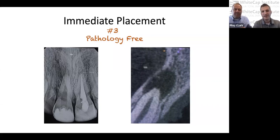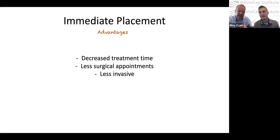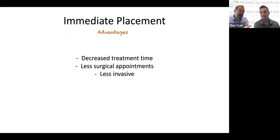Those are the big three for immediate placement. The advantages: decreased treatment time — getting the bone graft and implant to heal simultaneously is a huge plus for efficiency and less surgical appointments for the patient. In the aesthetic zone especially, the big advantage is maintaining the periodontal scallop of the marginal epithelium, because you haven't let it fall in and remodel. With a properly sized temporary or healing abutment, you preserve that architecture.